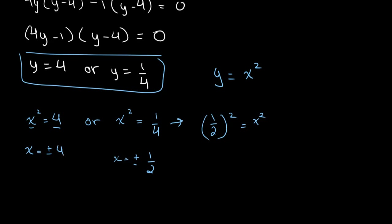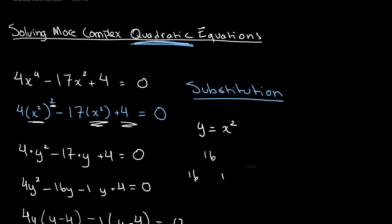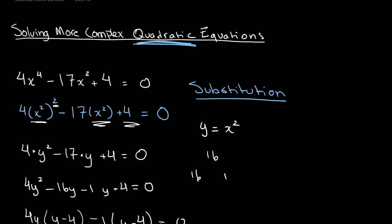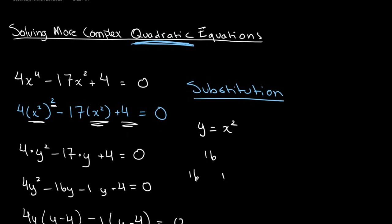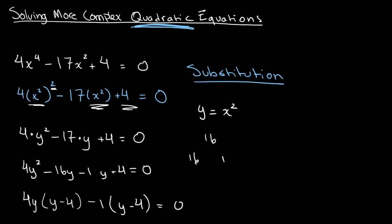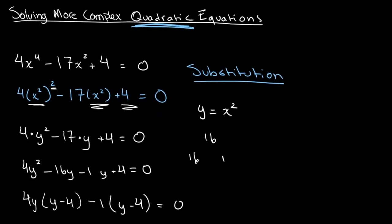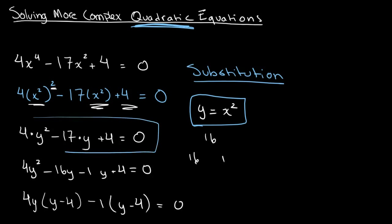So once again, we started out with an equation to the power of 4, and what we did was use the substitution y equals x squared in order to make this a quadratic equation that we were able to solve much more easily. And that's why this is called solving complex quadratic equations.